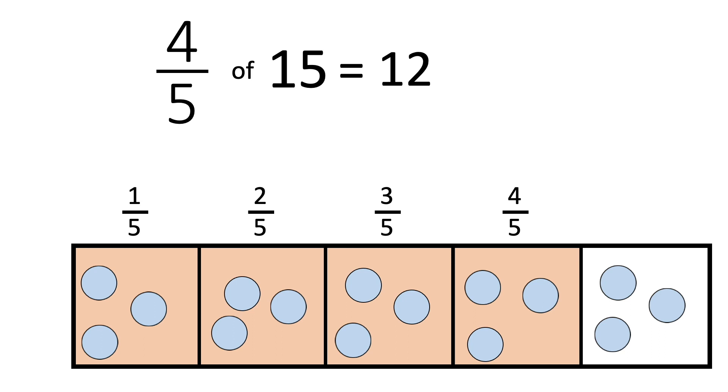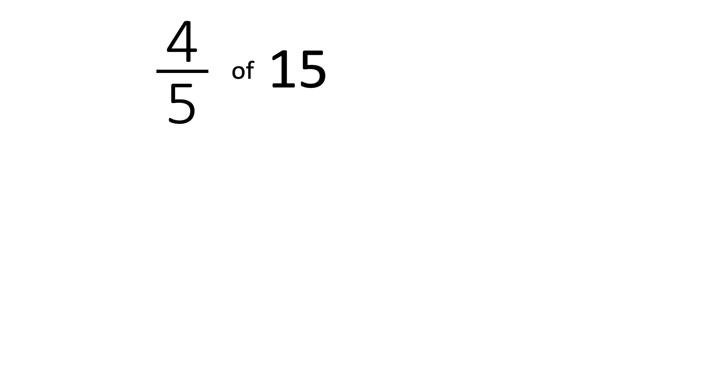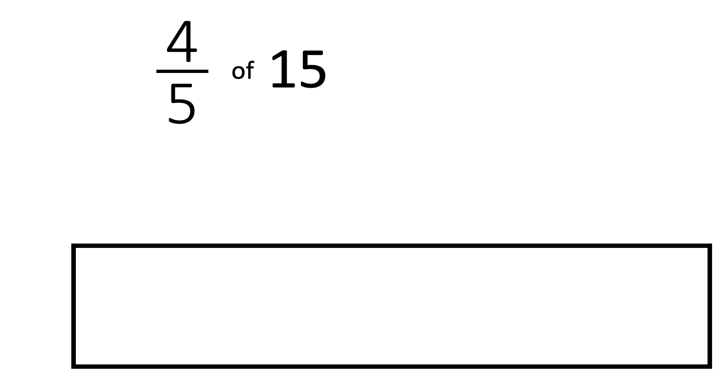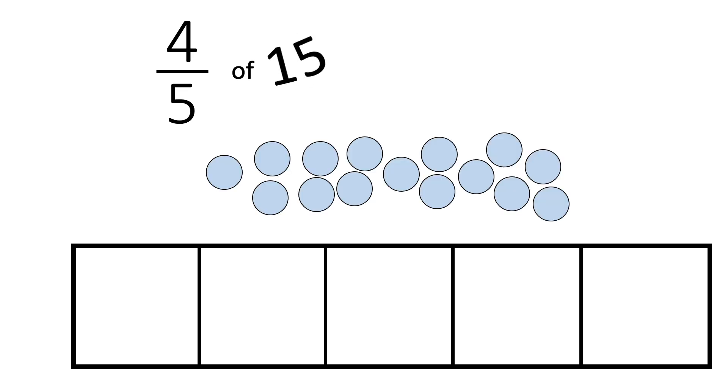Let's have another look at how we can work this out. So, our denominator tells us to split our whole into five pieces. We've got fifteen counters altogether. So the first thing we did was split these counters into our five equal pieces. So we did fifteen divided by five.